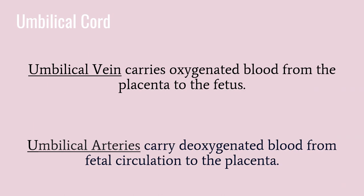The umbilical cord is formed from the amnion, which is a thin, tough membrane that protects the fetus. It is a lifeline from the mother to the growing embryo. It has one large vein and two small arteries. A way to remember this is a smiley face — the eyes are the arteries and the mouth is the vein. Or think of the name AVA — the A's are for the arteries and the V is for the vein. The umbilical cord is surrounded by Wharton's jelly, which prevents compression on the arteries and vein. On average, a term umbilical cord is 22 inches long and one inch wide.